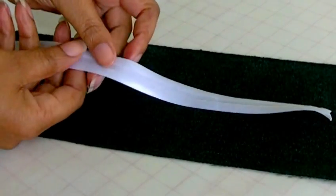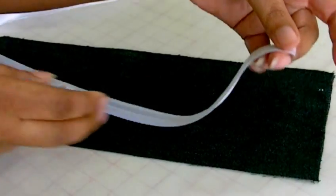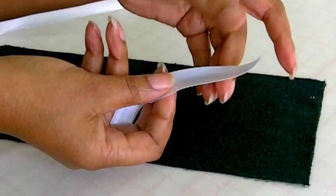This is what bias binding looks like. This is the back of the bias binding. Bias binding comes in different fabrics. You can even make your own.